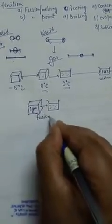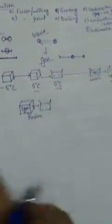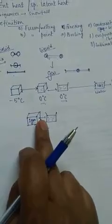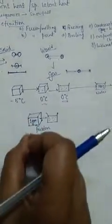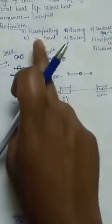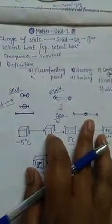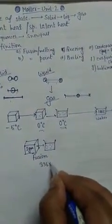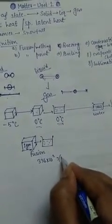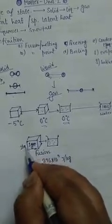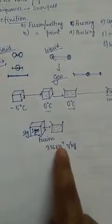This is known as the specific latent heat of fusion, or specific latent heat of melting. The temperature at which a solid turns into liquid is known as the fusion point. The value of specific latent heat of fusion is 336 × 10³ joules per kilogram in SI units, meaning you take one kilogram instead of one gram.